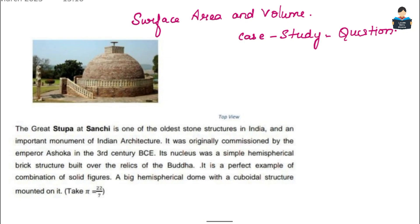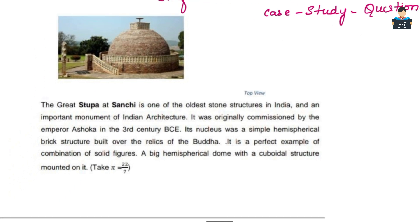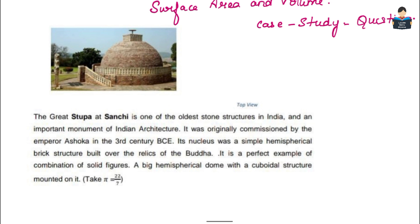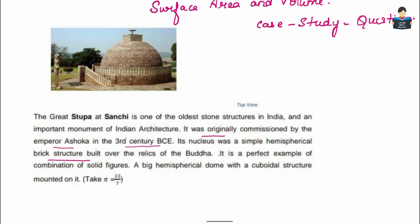Hello everyone, welcome to our channel. In this video, Class 10 Surface Area and Volume lesson — a case study question on the Great Stupa at Sanchi. It is one of the oldest stone structures in India and an important monument of Indian architecture. It was originally commissioned by Emperor Ashoka in the third century BCE. Its nucleus was a simple hemispherical brick structure built over the relics of Buddha. It is the perfect example of the combination of solid figures — a big hemispherical dome with a cuboidal structure mounted on it.